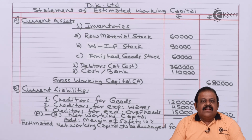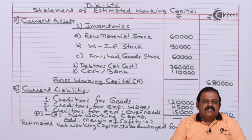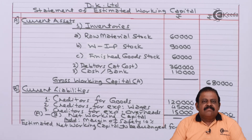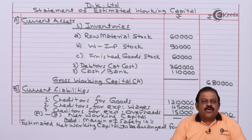The second key point was that debtors were given at sale price, but in the actual calculation of working capital we were required to take debtors at cost price. Thanks for watching this video. Stay tuned with Ikeda and subscribe to our channel. Thank you.